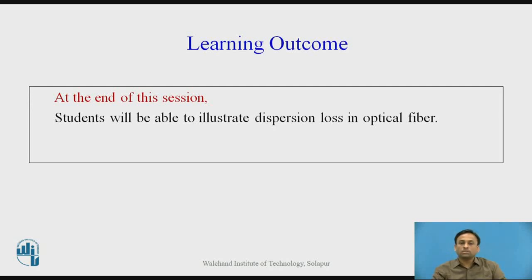After that we have seen the scattering losses. In scattering losses we have seen Rayleigh and Mie scattering. The light gets scattered when the operating wavelength is less than or greater than the particle size in Rayleigh and Mie scattering respectively. We have also seen the bending losses — macro bending and micro bending — which are manufacturing losses that can be overcome when making a new optical fiber.